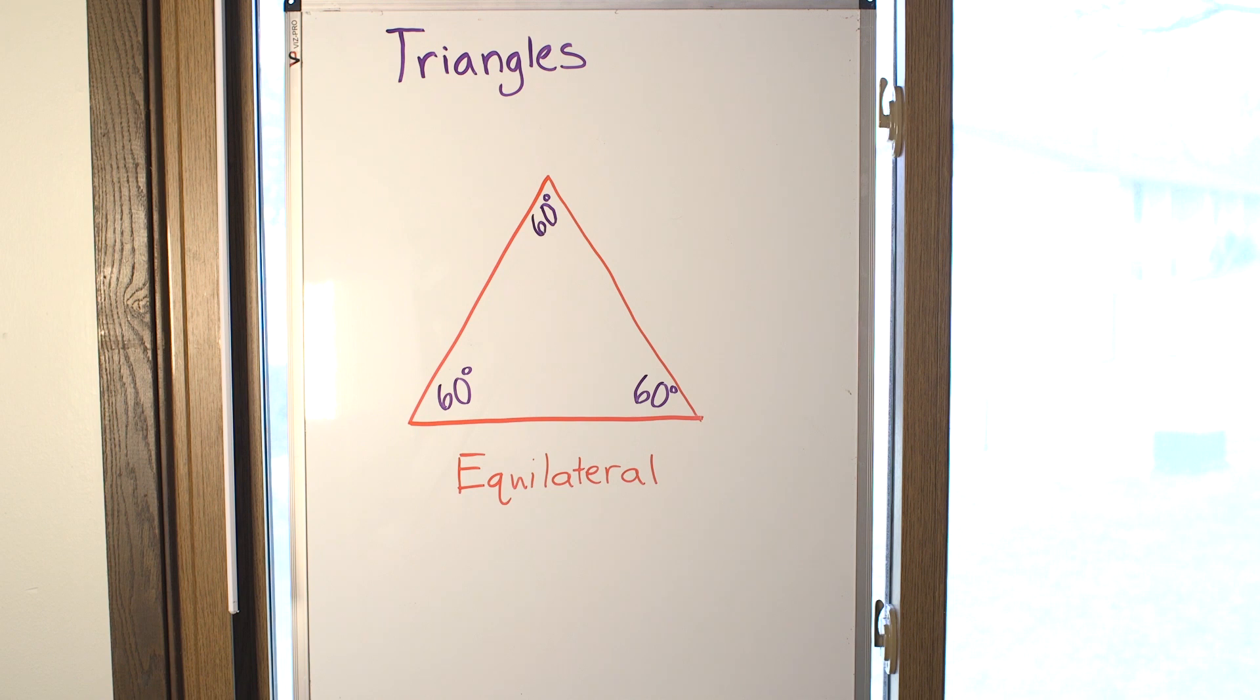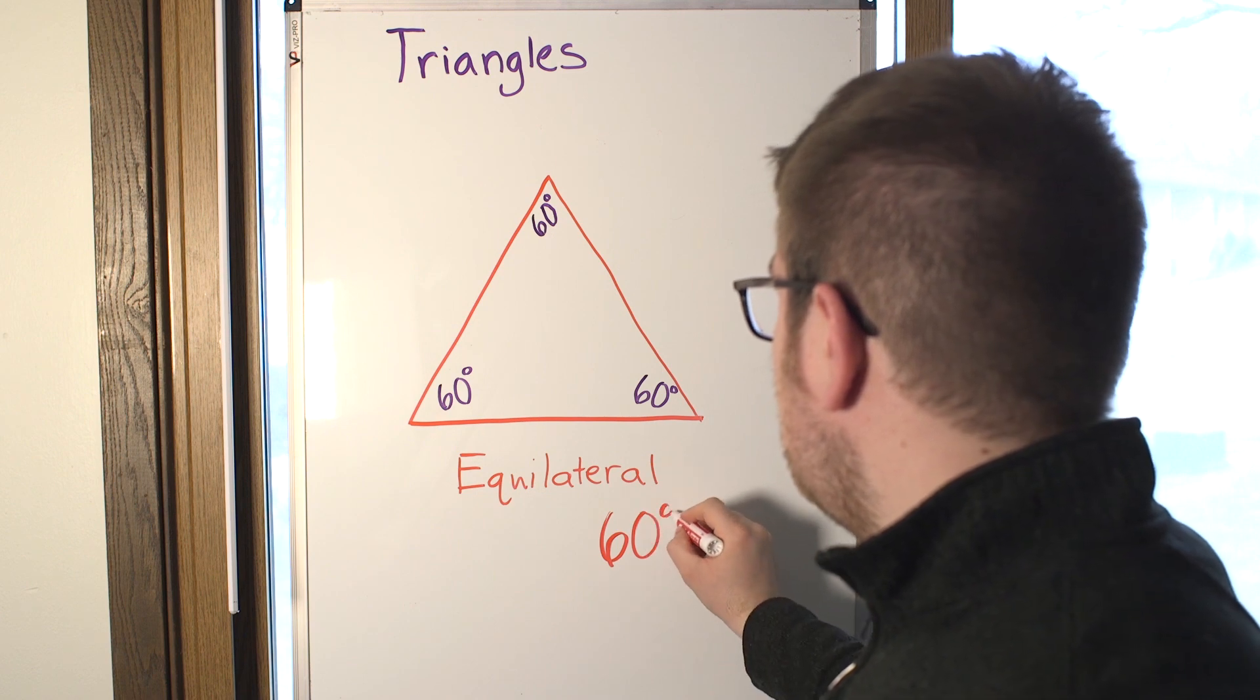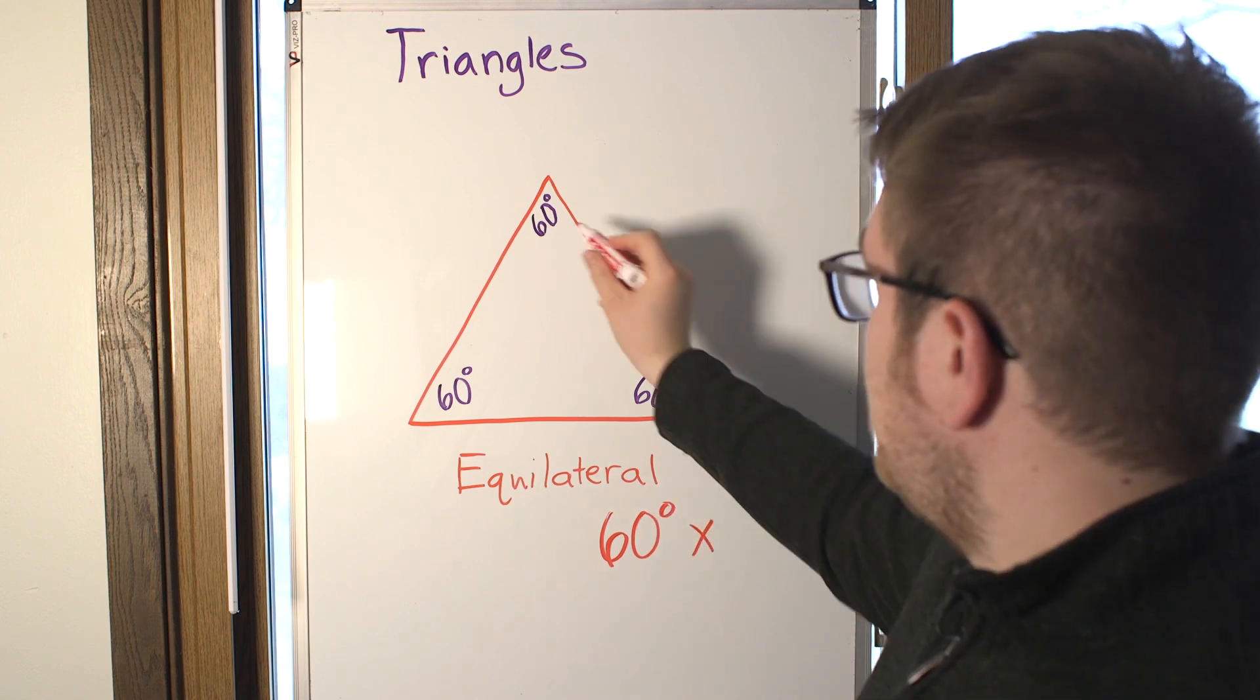You can do it one of two ways. You can add these together, or you can multiply 60 degrees times 1, 2, 3.